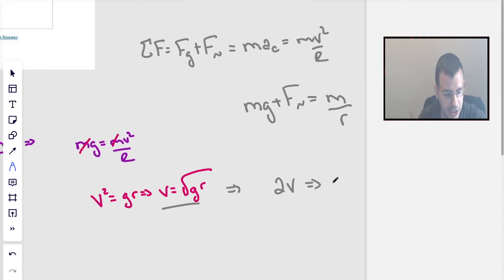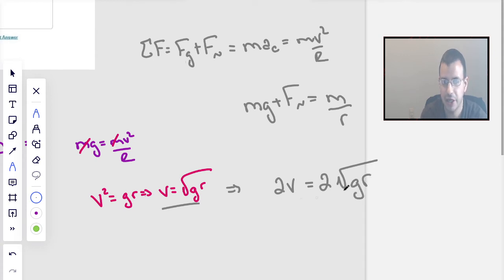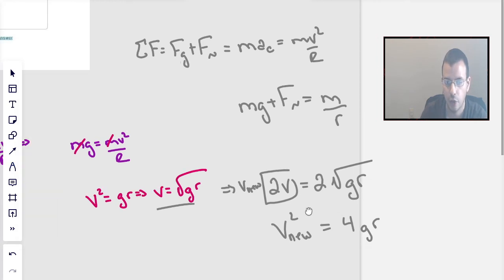Twice the speed, which is going to be 2 times the square root of gr. Squaring both sides, we're going to get v nu squared is going to be 4 gravity times radius.